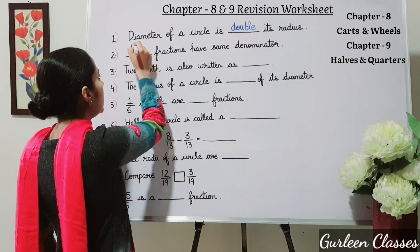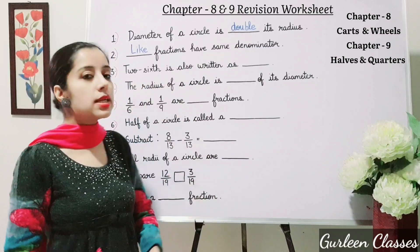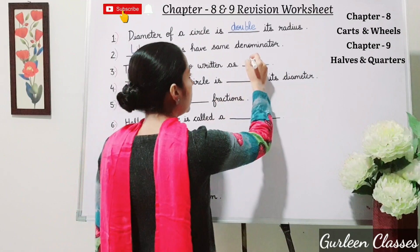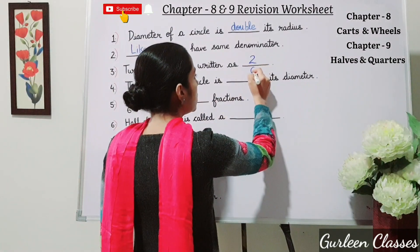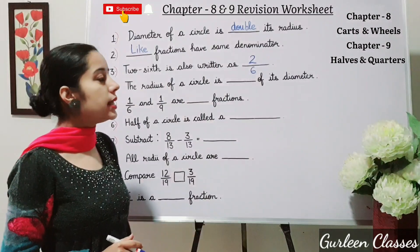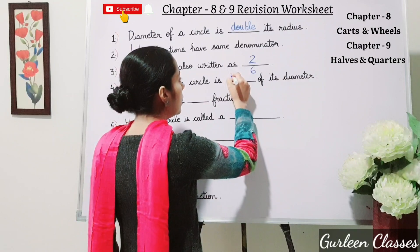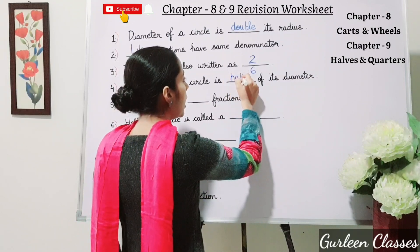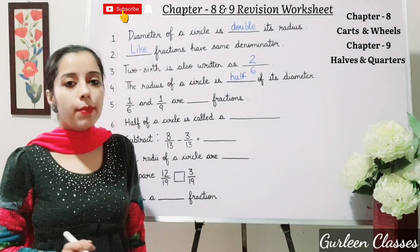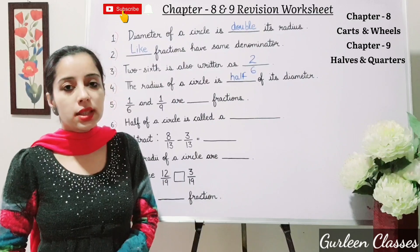Number three: two-sixth is also written as — two will be in the numerator and six will be in the denominator, so write 2/6. Number four: the radius of a circle is dash of its diameter — half of its diameter. Write here 'half'.